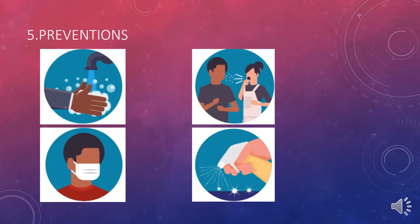For prevention, first, wash your hands with soap and water for at least 20 seconds. Do this every time you go outside, after coughing, after sneezing, or after blowing your nose. If soap and water are not available, use a sanitizer with at least 60% alcohol solution.